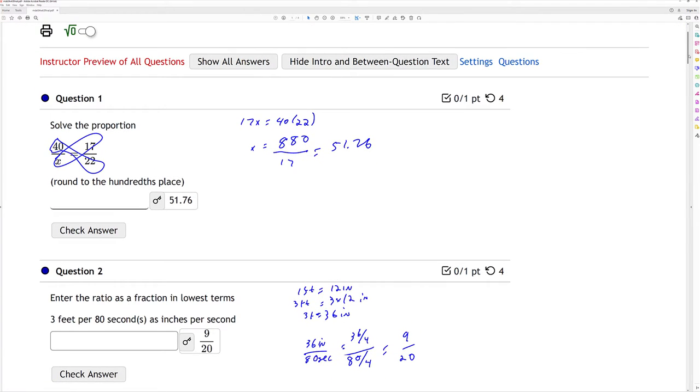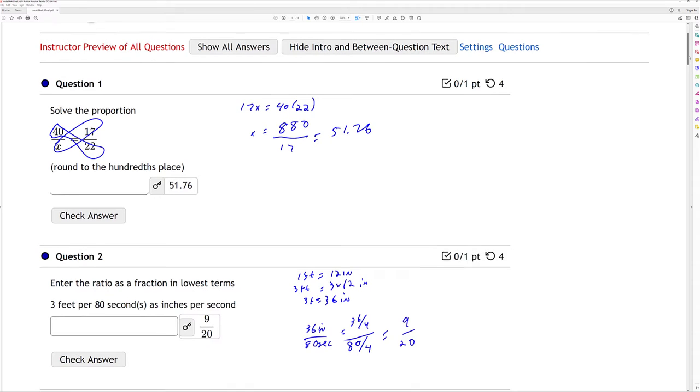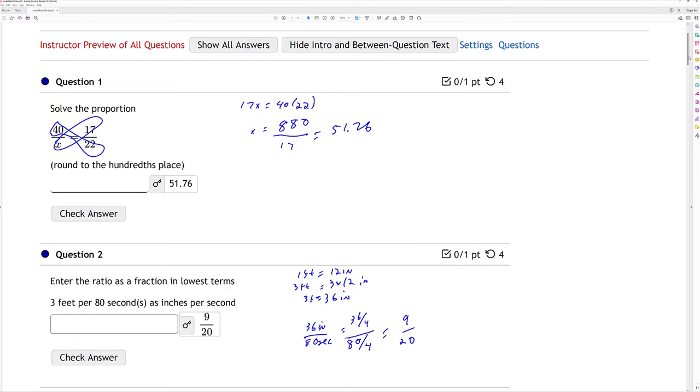First one there. Did cross multiply and divide it. So I have 17x is equal to 40 times 22. 40 times 22 is 880 divided by 17.